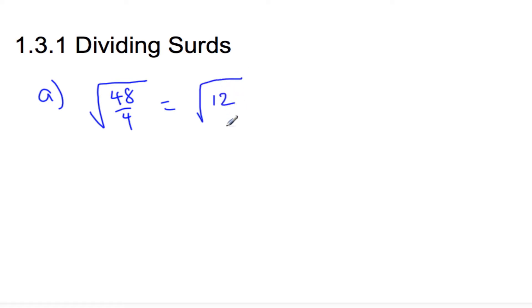Square root of 12 over 1, which I can just ignore. Okay, and then we look through our square numbers, and 4 goes into 12. So we can do 4 times 3. And square root of 4 is 2, and then square root of 3, we leave. As simple as that. Okay, let's try another one.